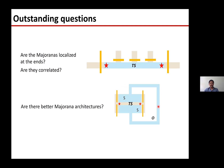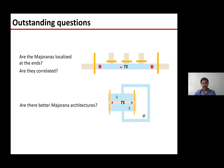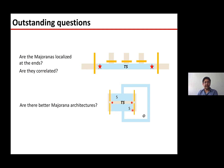Another interesting question is: are there other architectures that move beyond the nanowire picture? Can we create Majoranas without nanowires? One example is Josephson junctions - in some ways a dual of nanowires. You have two superconductors with a semiconductor in the middle, and a superconducting loop. The idea is that you can control the appearance or destruction of Majoranas through a small magnetic field that tunes the phase difference between the Josephson junctions. These are questions we are trying to address right now.